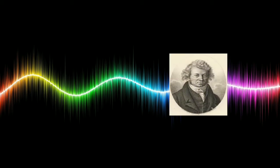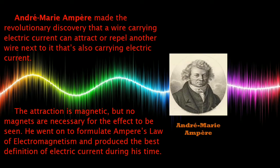We also have André-Marie Ampère. André-Marie Ampère made the revolutionary discovery that a wire carrying electric current can attract or repel another wire next to it that's also carrying electric current. The attraction is magnetic, but no magnets are necessary for the effect to be seen. He went on to formulate Ampère's law of electromagnetism and produced the best definition of electric current during his time.